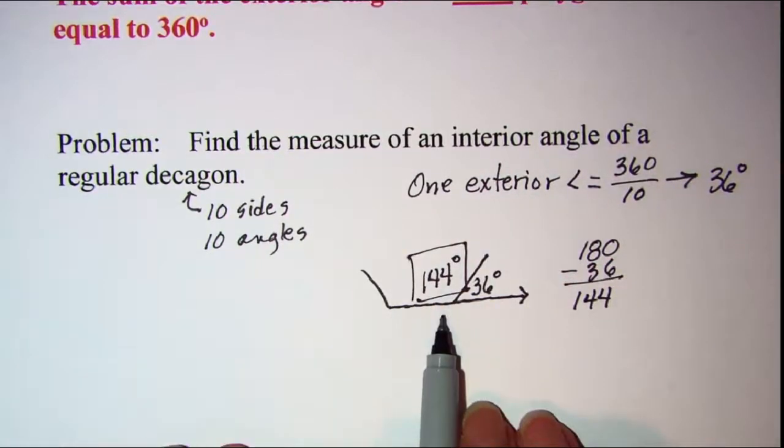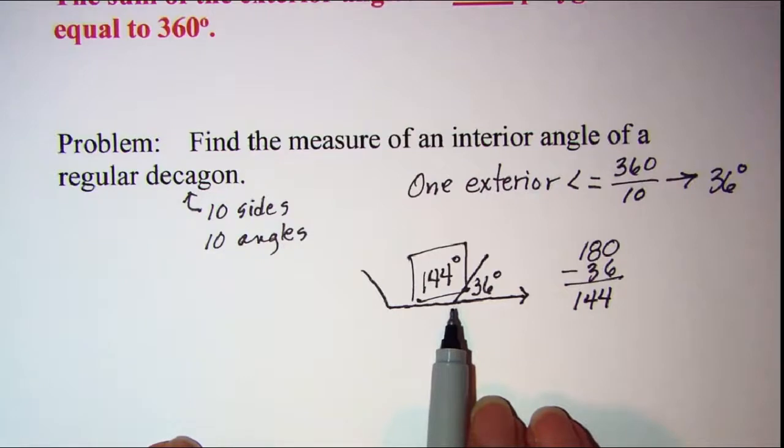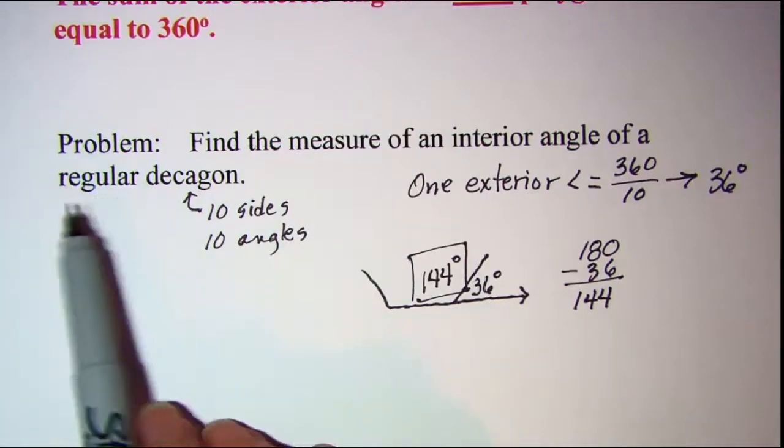So this gives us another way to find the measure of an interior angle as long as we have a regular n-sided polygon.